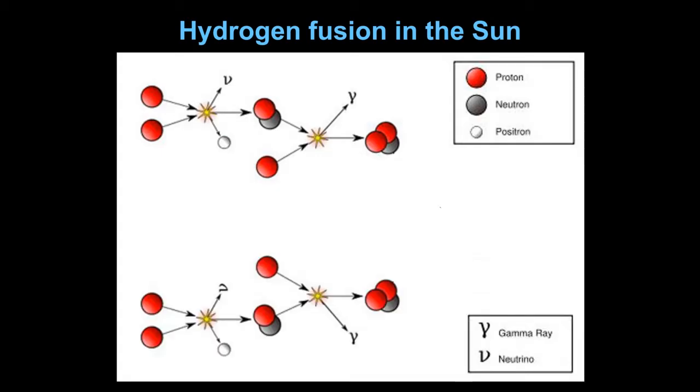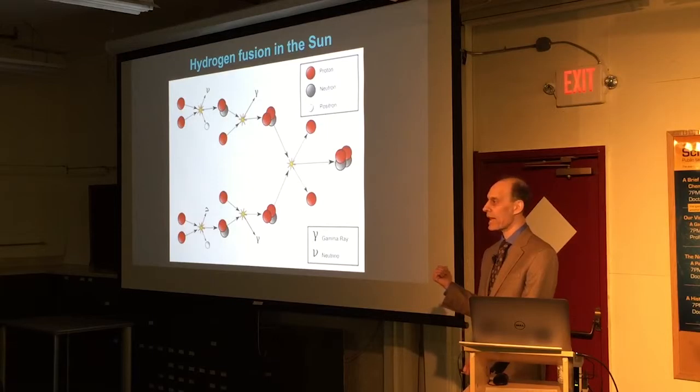Somewhere else in the sun the same thing happens and now you have two helium-3 nuclei. They come together, they react to form helium-4. That's the form of helium we're used to. It's two protons and two neutrons and the extra protons are just spit out. This is the reaction that powers the sun.